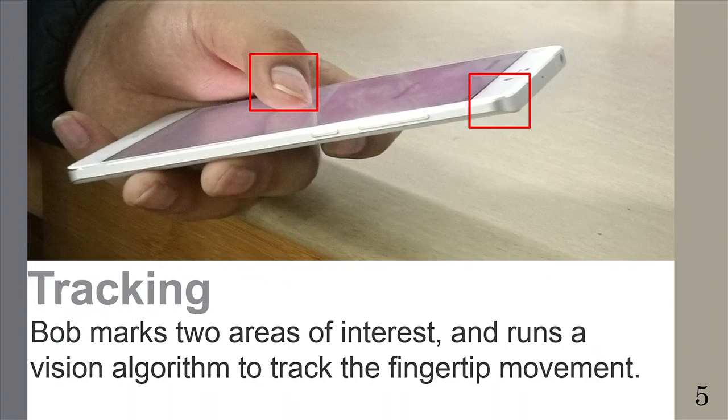So as shown in this picture, Bob can do this. Firstly, Bob can mark two areas of interest. One is the fingertip, and the other is the fixed point of the phone. And then, the location of two areas are inputted into tracking algorithm. And on the first video frames and subsequent video frames, the tracking algorithm can automatically output the location of two areas.